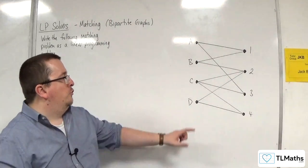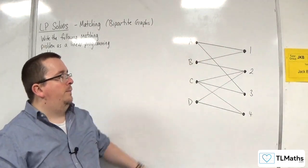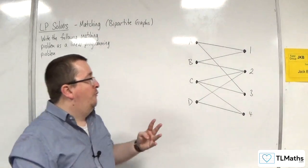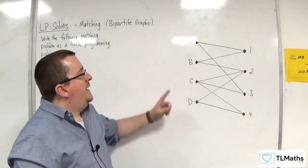And essentially what this is, it could represent four people, A, B, C, and D, with four jobs, 1, 2, 3, and 4. And the arrows.